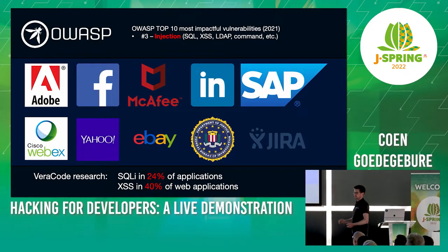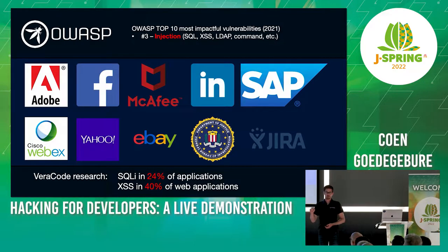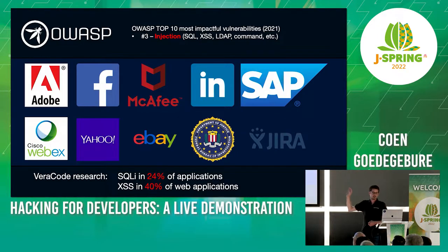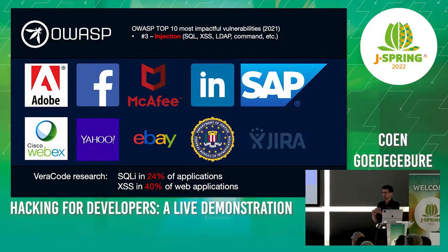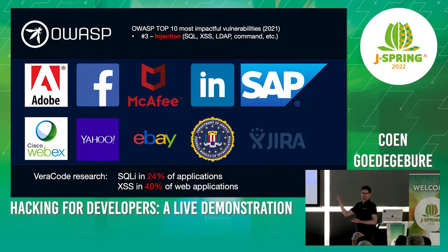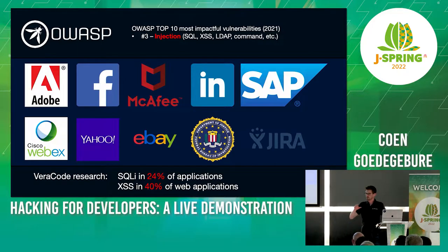Then why is it still the number three most impactful vulnerability? It happens a lot. All these companies you see here have been hacked over the past years, with vulnerabilities like SQL injection or cross-site scripting in their software. Veracode did some research: SQL injection is in 24% of all applications — down from 26% last time. And cross-site scripting is in 40% of web applications. Quite a lot, especially since you all know about these vulnerabilities.